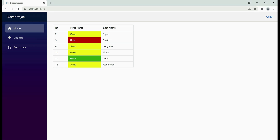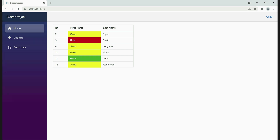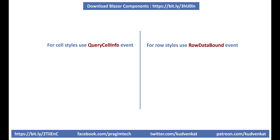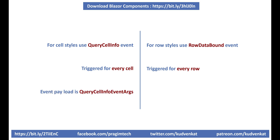At the moment we are applying styles to a cell, but what if we want to apply styles to the entire row — dynamically at runtime based on a specific column value? Same idea, the only difference is we handle a different event. To apply styles to a cell, we handle QueryCellInfo. Similarly, to apply styles to a row, we handle the RowDataBound event. QueryCellInfo is triggered for every cell in the data grid; RowDataBound is triggered for every row. For QueryCellInfo, the event handler receives QueryCellInfoEventArgs; for RowDataBound, it receives RowDataBoundEventArgs.